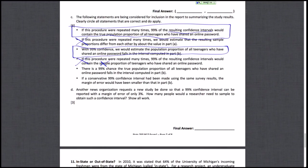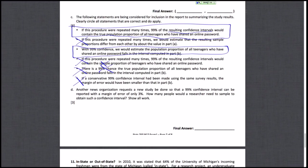The next statement says there is a 99% chance the true population proportion falls in the interval computed in part B. This is false because we can't talk about probabilities of a fixed value P being within a fixed interval — the value is either in there or it's not, so we can't assign a 99% chance. The final statement says if a conservative 99% confidence interval had been made using the same survey results, the margin of error would have been smaller than in part B. This is also false. A conservative confidence interval has a larger margin of error because it covers more ground — that's what makes it conservative.